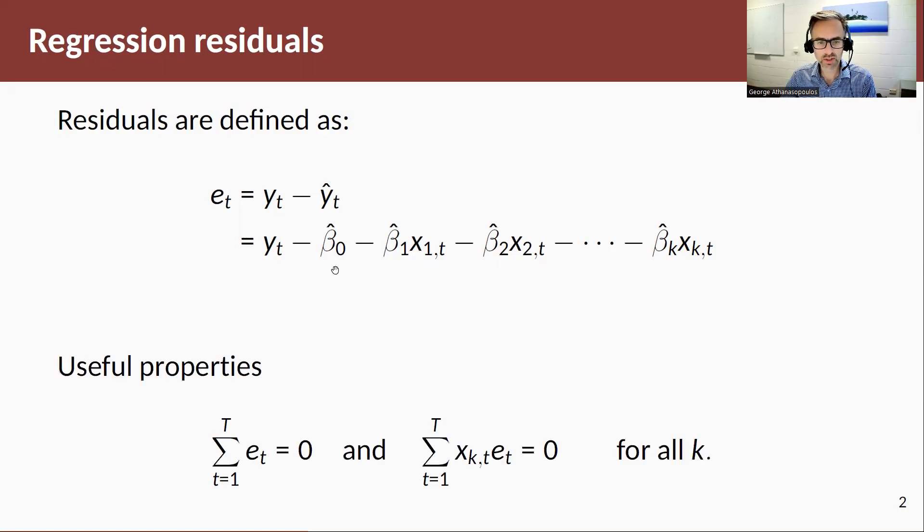And once you include an intercept in your model in general, your residuals will have these very useful properties. The first useful property is that the sum of your residuals will always equal zero and that they are orthogonal to each of the predictors you include in the model.